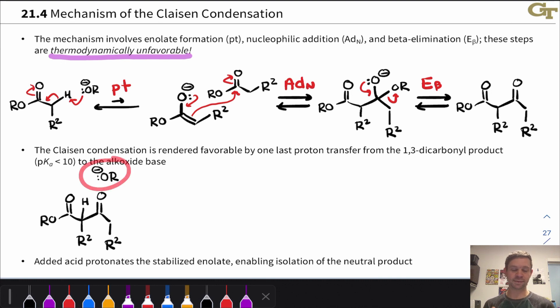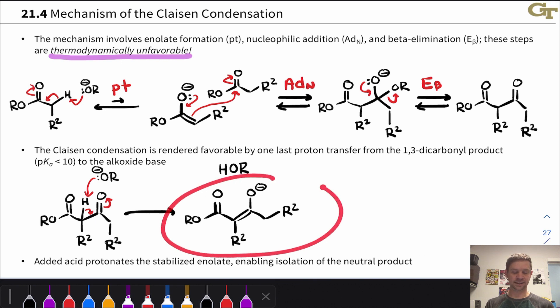One last proton transfer occurs. Remember, with that beta elimination we just generated alkoxide. That alkoxide base is now in the presence of a neutral beta-keto ester or more generally a 1,3-dicarbonyl compound. Pay close attention to this carbon—this was the alpha carbon in the original nucleophilic ester, and now that alpha carbon is actually doubly alpha, we might say. It's between two electron-withdrawing groups, so it is much more acidic than it was in the starting ester. Now we can deprotonate at that doubly alpha carbon to generate a stabilized enolate, an enolate stabilized by an additional electron-withdrawing group.